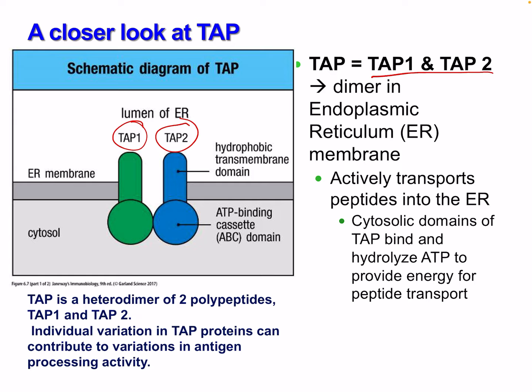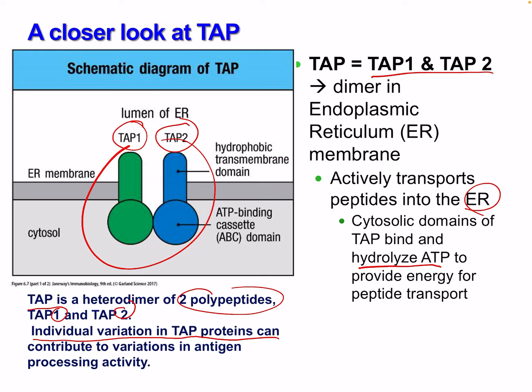TAP1 and TAP2 form a dimer in the endoplasmic reticulum membrane and actively transport peptides into the ER. Their cytoplasmic domains bind and hydrolyze ATP to provide energy for peptide transport. TAP is a heterodimer of two polypeptides — TAP1 and TAP2. There is individual variation in TAP proteins which can contribute to variations in antigen processing activity.